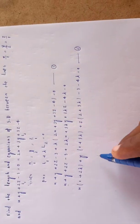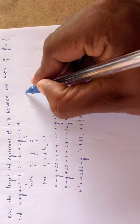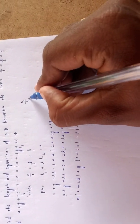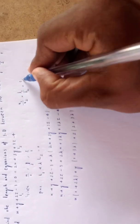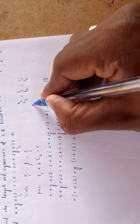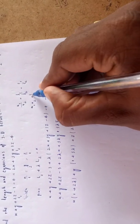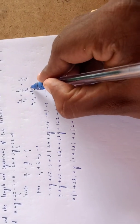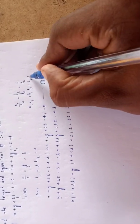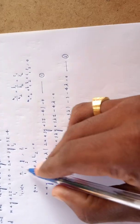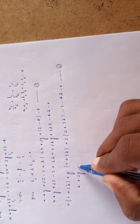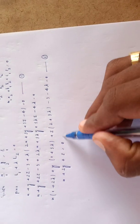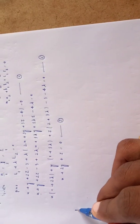For line L1 (x/1=y/2=z/1) to be perpendicular to the plane, we use the condition a1·a2 + b1·b2 + c1·c2 = 0. The direction ratios of L1 are (1, 2, 1). Equations 2 and 3 give perpendicular lines.